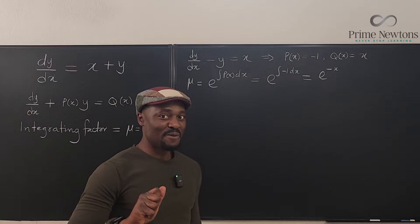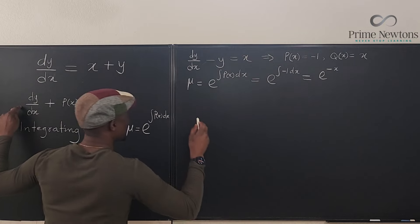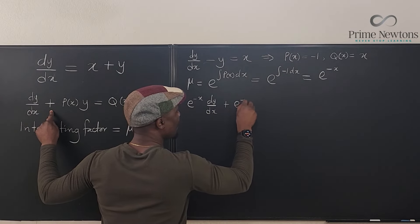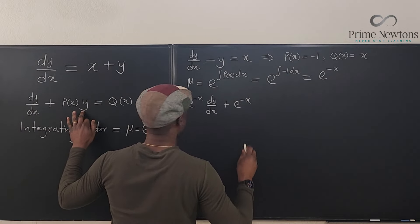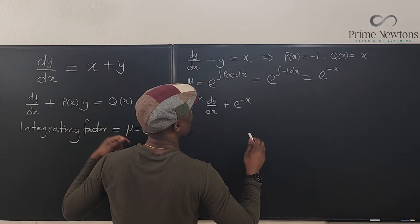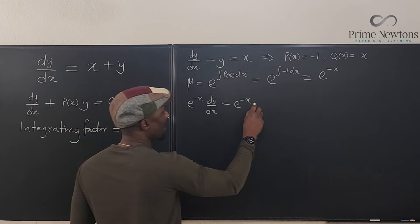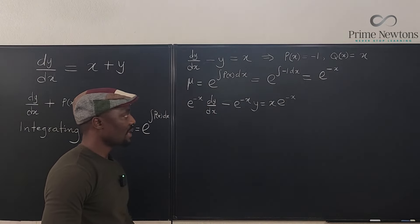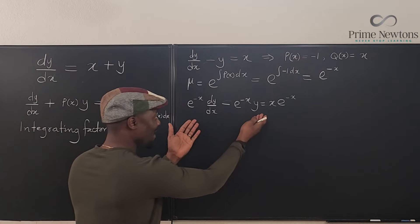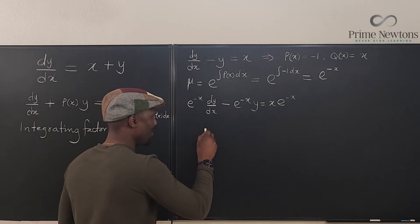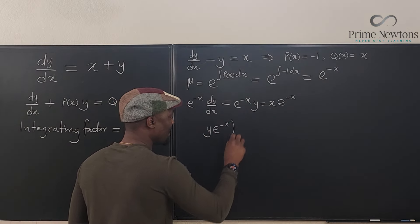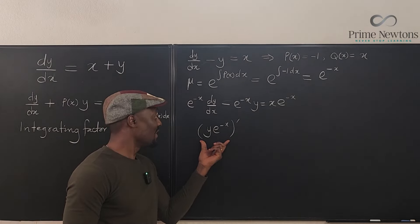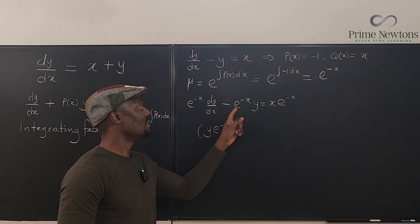Take that value and bring it here. Use e to the negative X to multiply through the equation. So we get: e^(−x) times dy/dx, plus e^(−x) times negative y, equals X·e^(−x). If you pay close attention, the left-hand side is the derivative of y·e^(−x). If I gave you y·e^(−x) and asked for its derivative with respect to X using the product rule, you'd get e^(−x)·dy/dx minus e^(−x)·y — which is exactly what we have.